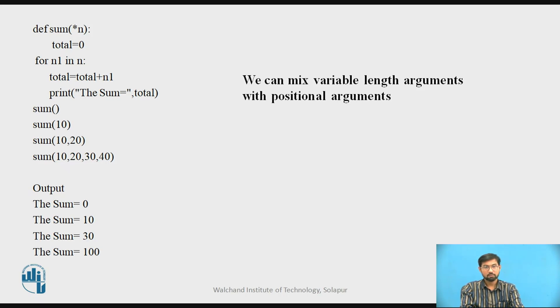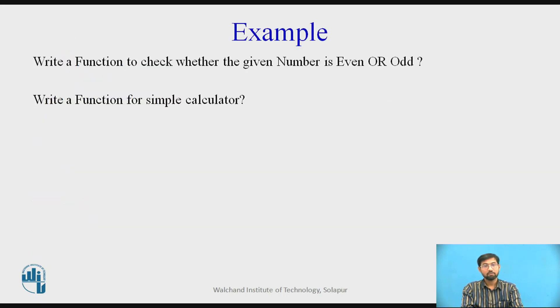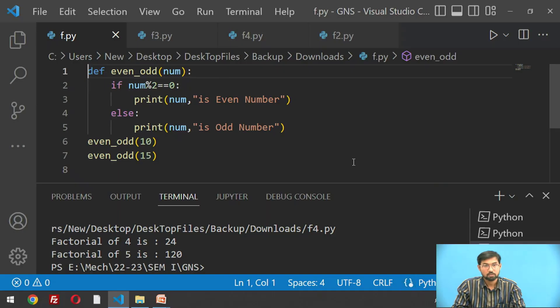Let's move ahead with some examples. We have to write a function to check whether the given number is even or odd. We are using even and odd number. We define even_odd, a number is in the function bracket.